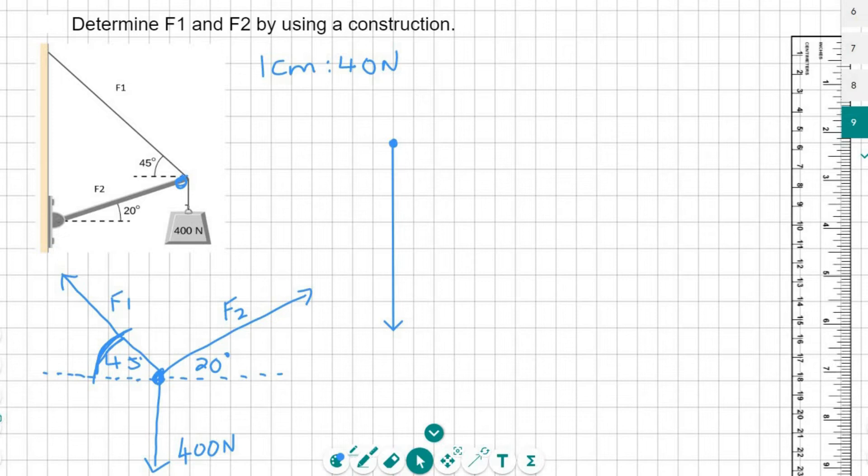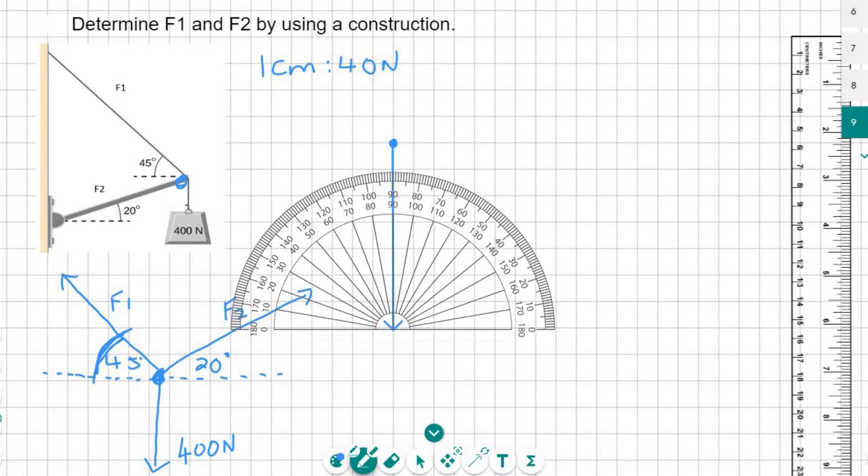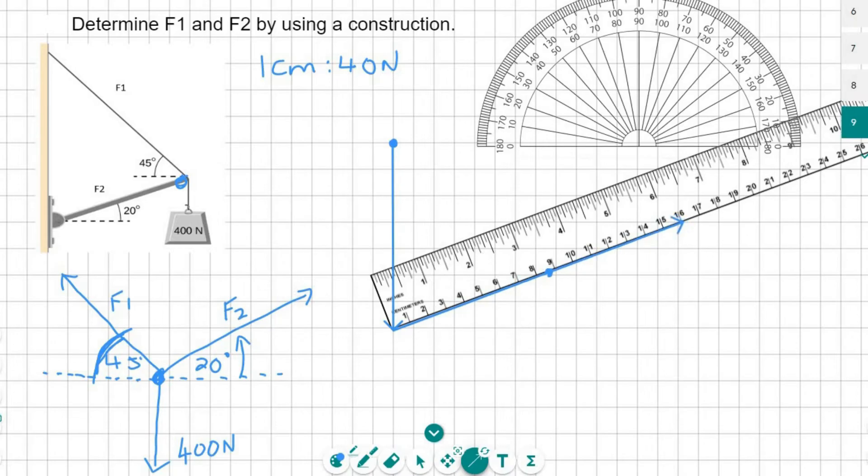Now the next part I'm going to do is F2, which is going to go off at 20 degrees. And so I'm going to measure 20 degrees like that, because I can see that it's measured 20 upwards. But I don't know how long the line is, but that's okay. I'm just going to draw a pretty long line. I'm sure that'll be enough.